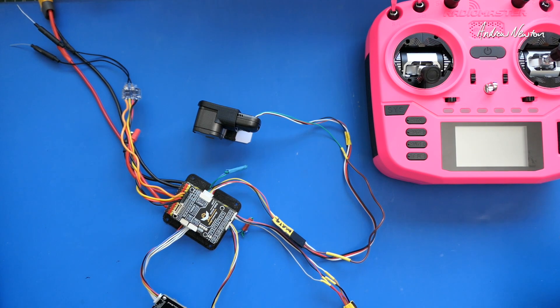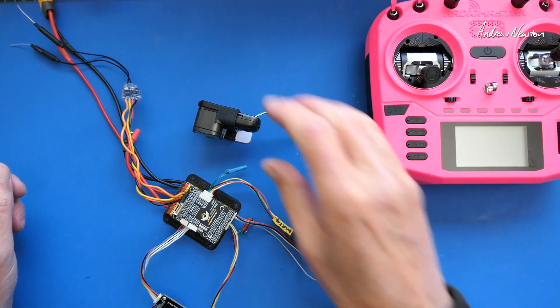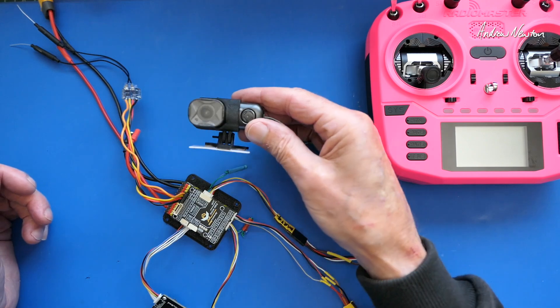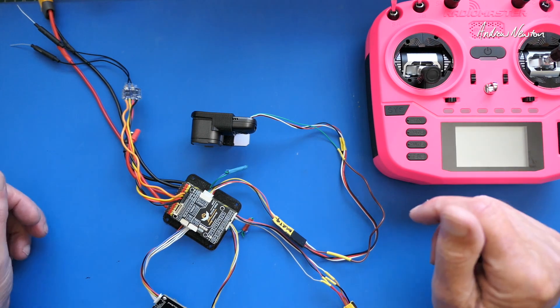This came from a viewer request from Julius Liem. I've never actually wanted to use UART control of the Runcam Thumb. I tend to just get it recording when I start flying and turn it off when I finish flying. I find that easier.